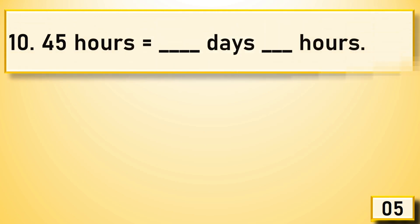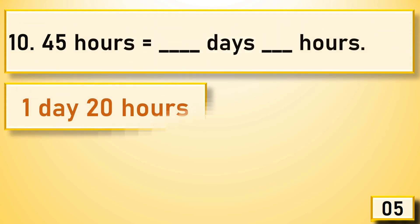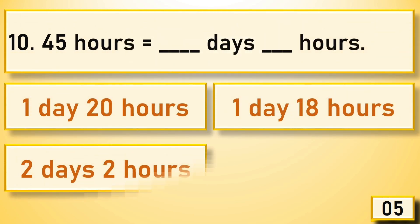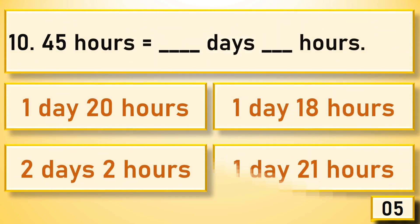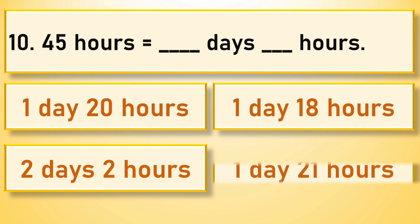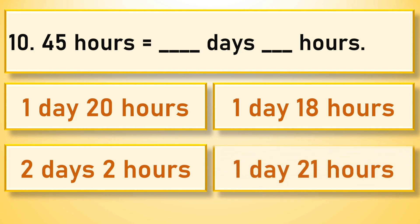45 hours is equal to how many days and hours? 1 day, 21 hours.